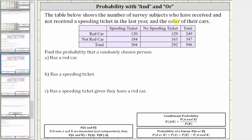The table below shows the number of survey subjects who have received and not received a speeding ticket in the last year and the color of their cars. Notice how 596 people were surveyed.